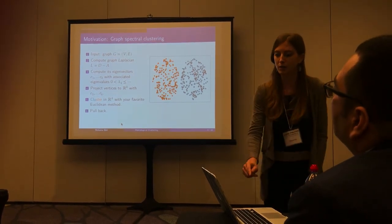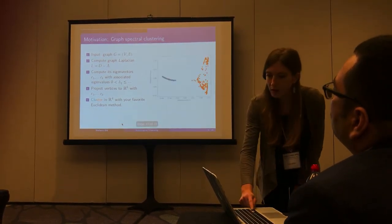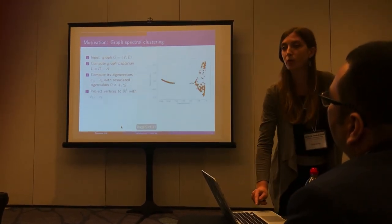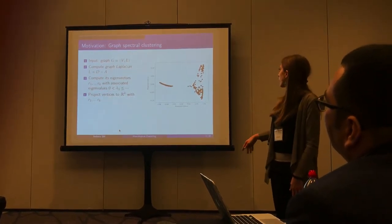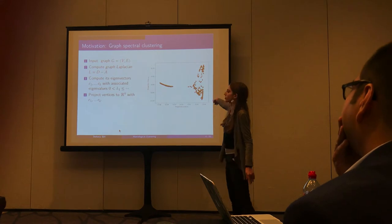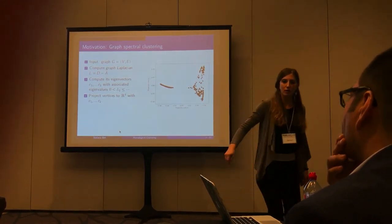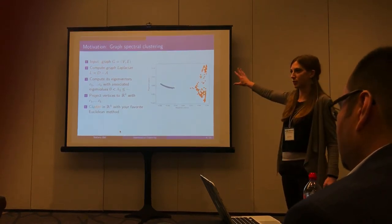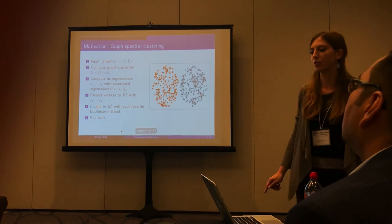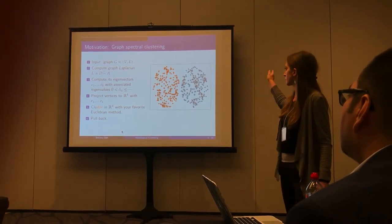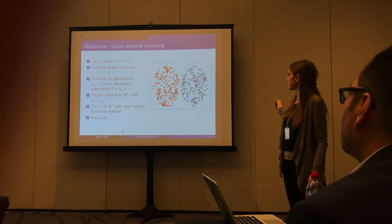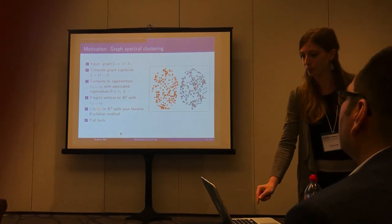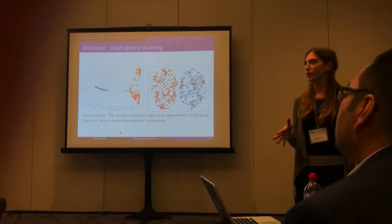Let me go through an example. We have a graph, we compute the graph Laplacian, and compute the two eigenvectors associated to the two smallest non-zero eigenvalues to project the vertices into R^2 as shown in the figure on the right. Then we use k-means with k=2 to find two communities and pull them back on the original graph, obtaining clusters given by the vertices in orange and vertices in blue, which detect highly dense components of the graph.